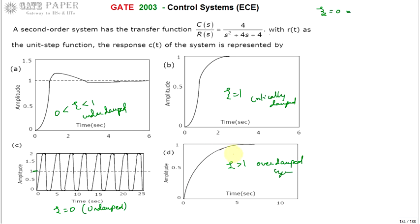When zeta is greater than one, it is an over-damped system, which reaches the final value but is more sluggish compared to the critically damped case. When zeta is zero, variation is large (zero to two); as zeta increases toward one, variations reduce; at zeta equal to one, variation is zero and the final value is reached quickly. Beyond zeta equals one, it takes more time — this is the sluggish behavior.